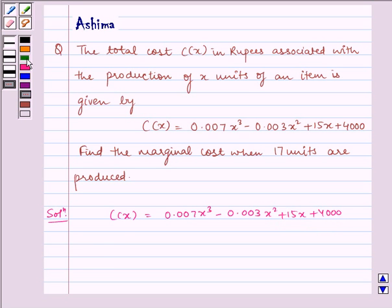Now differentiating it with respect to x, we get d/dx of C(x) equals 0.007 multiplied by 3x² minus 0.003 multiplied by 2x plus 15 plus 0.